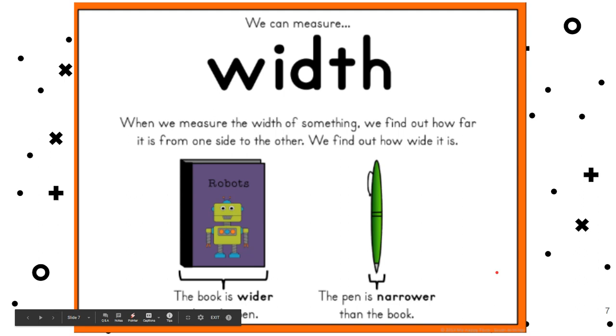So now today we're going to learn about measuring width. Width, when we measure width of the width of something, we find out how far it is from one side to the other. We find out how wide it is. So you see, you start on this side and go all the way to the other side. And it says the book is wider than the pen. The pen is narrower than the book. So again, we're going from side to side. So if you were going to measure the width of yourself, you would go from one side of your body, maybe across your stomach to the other. That's your width.